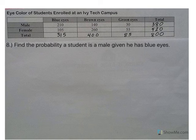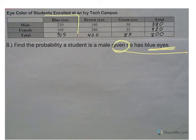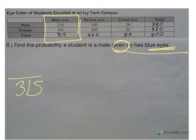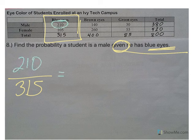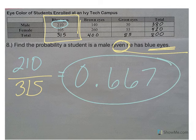Number eight: find the probability a student is male, given he has blue eyes. 'Given' is another word like 'if,' so we only care about the blue eyes column. The denominator is 315, the total of that column. Looking only at males in the blue column, there are 210 males. So 210 over 315 gives 0.667.